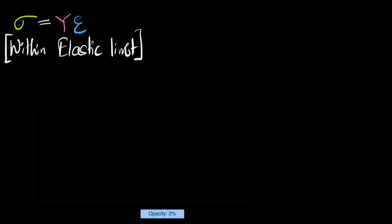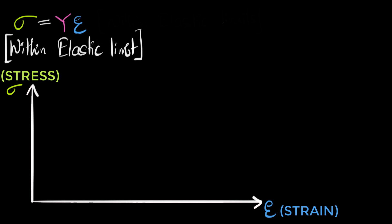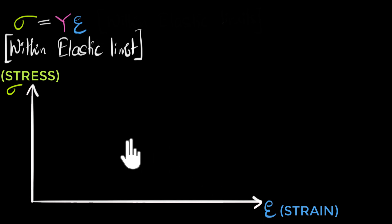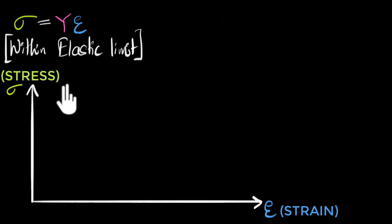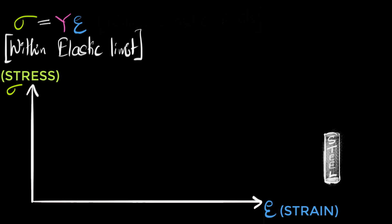The best way to do that is by drawing a graph. Over the y-axis we're going to plot the stress, and over the x-axis we're going to plot the strain. The shape of this graph really depends on which material we're dealing with and what kind of stress we're dealing with — tensile or compressive. For this video, we're going to focus on steel, and the kind of stress we'll be talking about is tensile stress, which means we're pulling on the material to create tension.